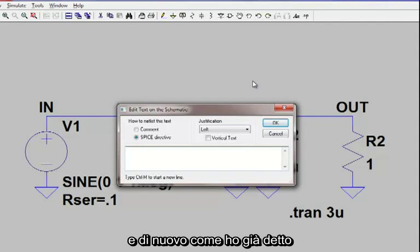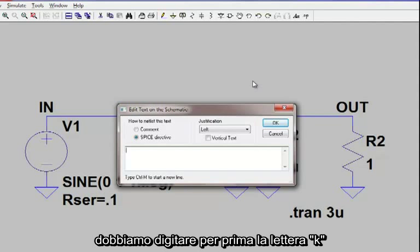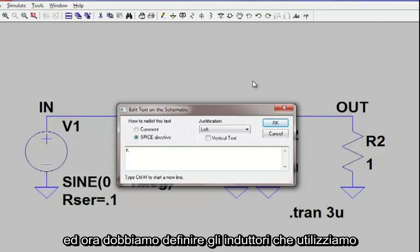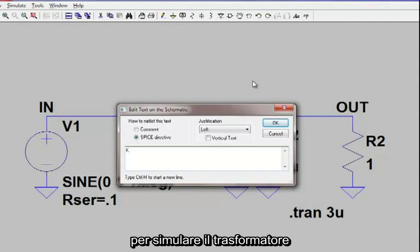And again, as I mentioned before, the first label on this new line will be K. And then we need to define the inductors that we're using to simulate the transformer, so L1, in our case L2.